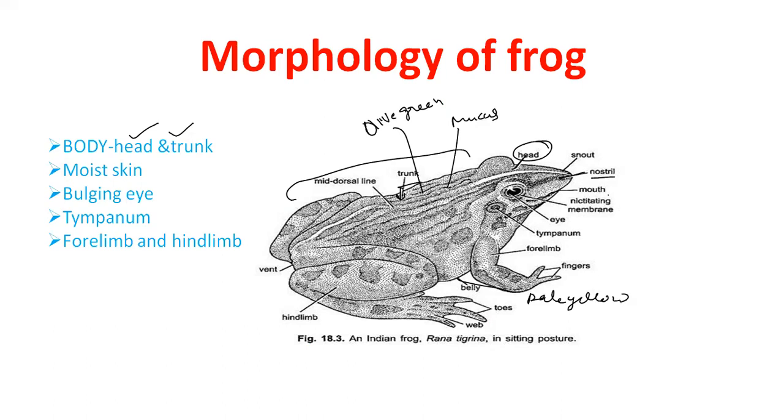They have one pair of nostrils. Also, they have bulging eyes. Their eyes are covered by nictitating membrane. This membrane protects their eyes in water and also helps them to see in water. Behind the eye, a membranous structure is found called tympanum. Tympanum works as the ear. It receives sound signals.